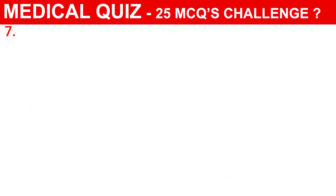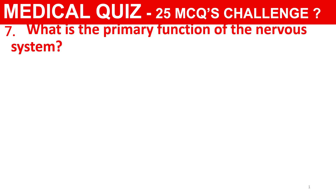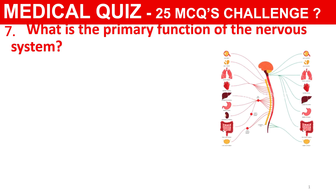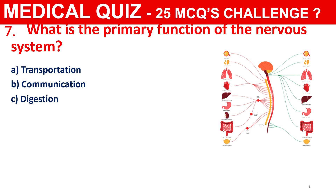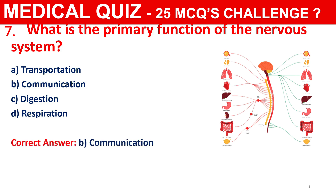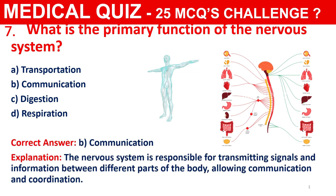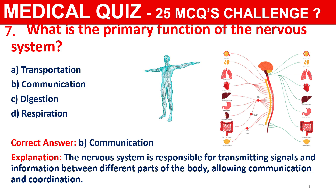Question 7: What is the primary function of the nervous system? Your options are Transportation, Communication, Digestion, or Respiration. The correct answer is B, i.e., Communication. The nervous system is responsible for transmitting signals and information between different parts of the body, allowing communication and coordination.